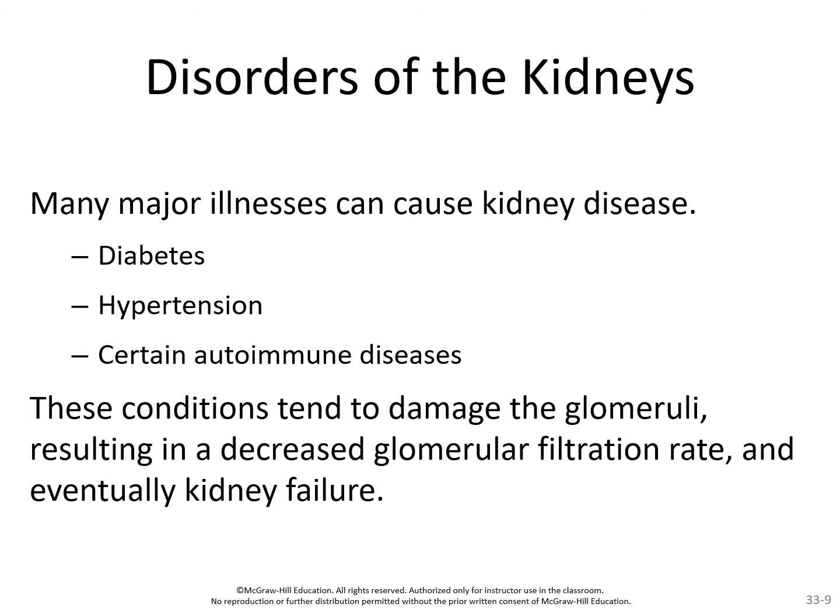Hypertension does the same thing — increased blood pressure pushes more blood through the glomeruli, placing them under strain and causing damage. If the glomeruli take on too much damage, they can start forming scar tissue. That scar tissue acts as a thickener for the filter in the glomerulus, decreasing the glomerular filtration rate and potentially leading to kidney failure.